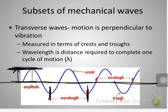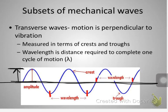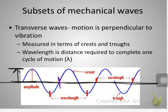Wavelength is either trough to trough or crest to crest. Can it be equilibrium to equilibrium? No — trick question, but everybody wants to say yes. A wavelength is where you've gone through one entire cycle of motion. Going from trough to trough, you go up to equilibrium, up to a crest, down to equilibrium, down to a trough — that's an entire cycle. Going from equilibrium to the next equilibrium is only half a cycle, only half a wavelength.